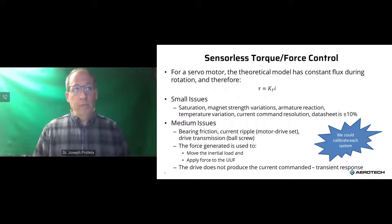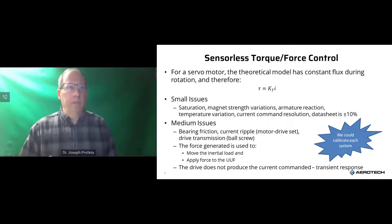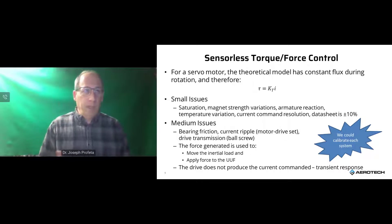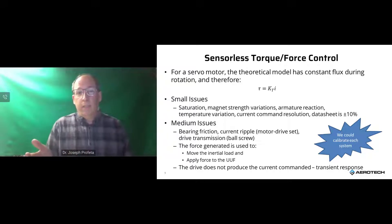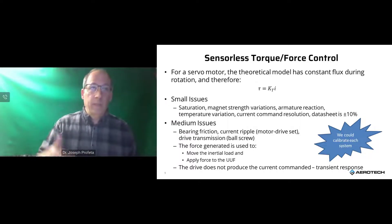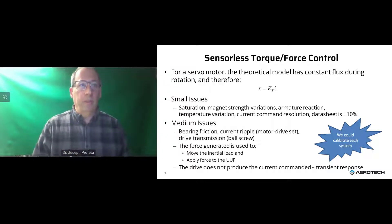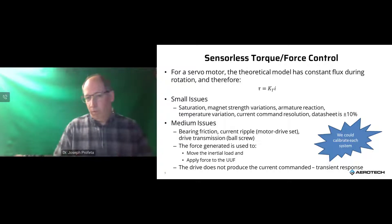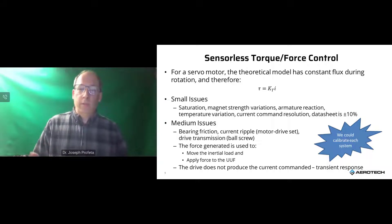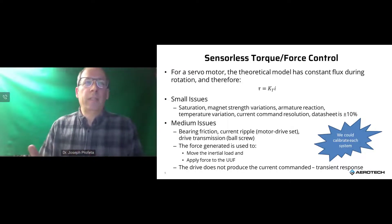The theoretical model is that torque equals KT times current. However, there are small issues: flux saturation in motor design, magnet strength variation by batch, armature reaction in the flux path, and temperature variation corrupting flux constancy. There's also current resolution in the drive. Adding these up, most motor manufacturers' data sheets list KT as plus or minus 10%, which may be insufficient for high-performance force control.